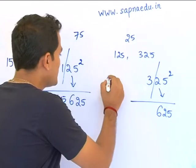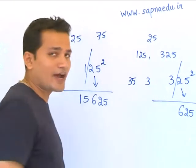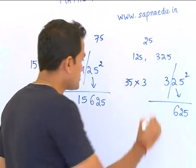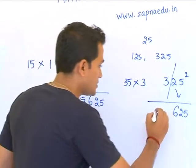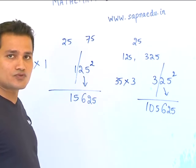Now you have 3 here. So write 3 twice. Okay? Now just write 5 and multiply these two numbers. 35 into 3 is 105. So 325 square is 105,625.